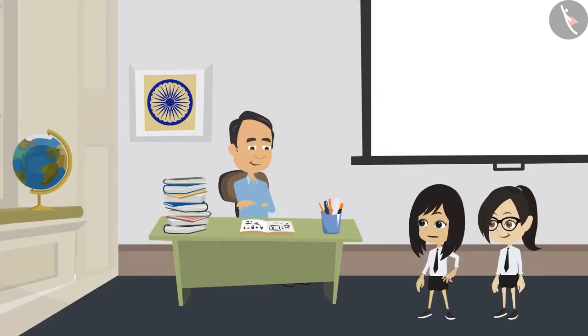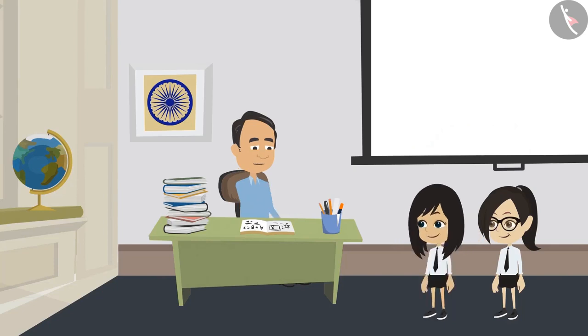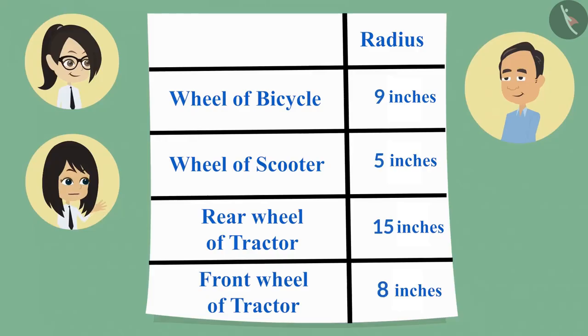Now, I can tell whether the front wheel of the tractor is bigger or the wheel of the bicycle. Please tell. Sir, the wheel of a bicycle is bigger because its radius is 9 inches, which is more than the radius of the wheel of the tractor, which is 8 inches.